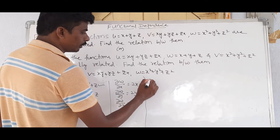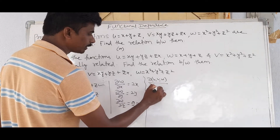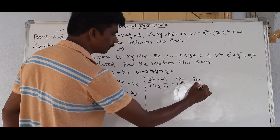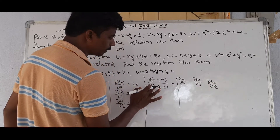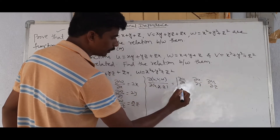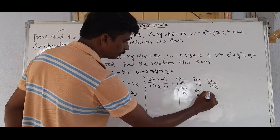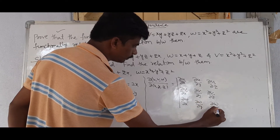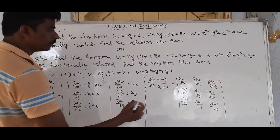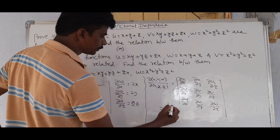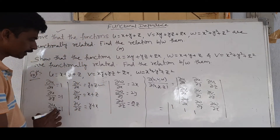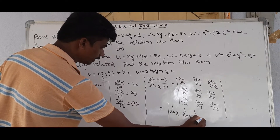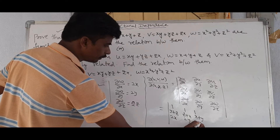We write J = ∂(u,v,w)/∂(x,y,z) as a 3×3 determinant. First row: 1, 1, 1. Second row: y+z, z+x, x+y. Third row: 2x, 2y, 2z. Now we expand this determinant.